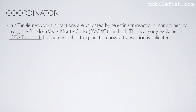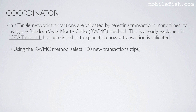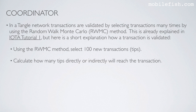In a tangle network, transactions are validated by selecting transactions many times using the Random Walk Monte Carlo method. Here is a short explanation of how a transaction is validated. Using the Random Walk Monte Carlo method, select 100 new transactions, meaning tips. Calculate how many tips directly or indirectly will reach the transaction.